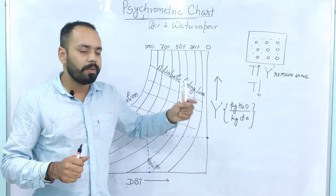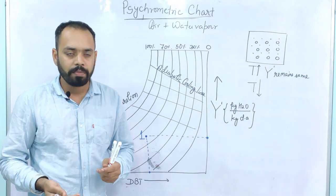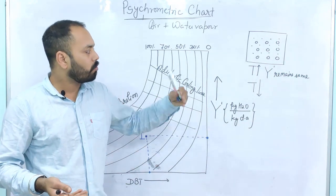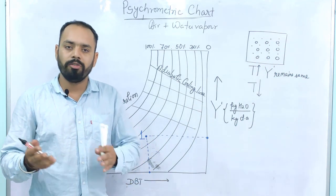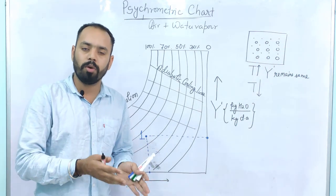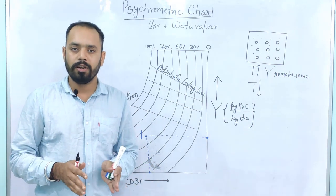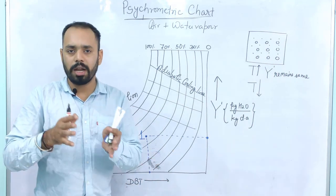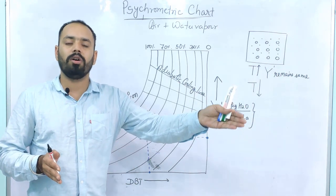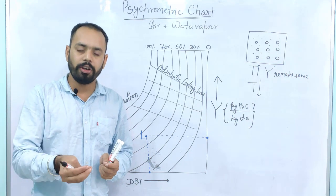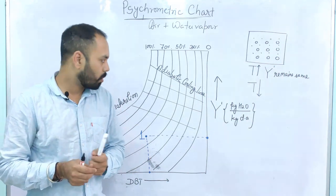When the absolute humidity of the system decreases, this is called dehumidification. When the absolute humidity of the system increases — which requires adding more water vapor, not possible in a closed container — that is called humidification. So humidification means an increase in absolute humidity of the air vapor mixture, and dehumidification means a decrease in absolute humidity.